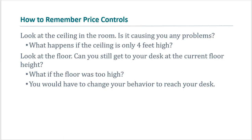How can you remember price controls? There is a difference between a binding and non-binding price control. For a binding price ceiling: look at the ceiling — no problems right now. But crawl under a desk or table — what happens if the ceiling is too low? You want to go higher but you cannot. In a binding price ceiling, the price wants to rise but can't. For a binding price floor: stand on top of the table. At this height you will have trouble reaching your computer, which is still further down.